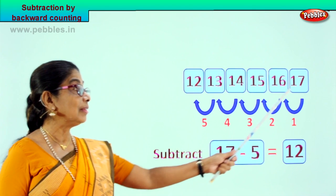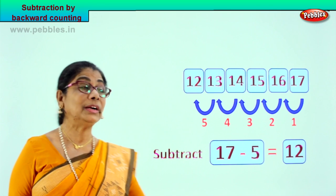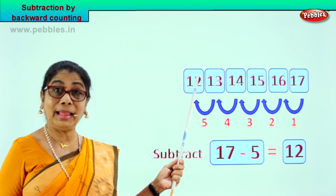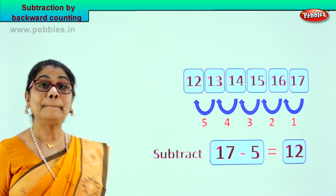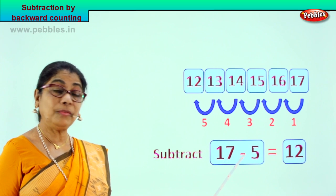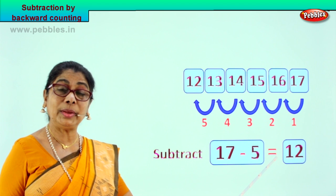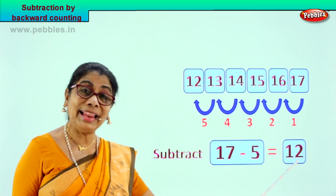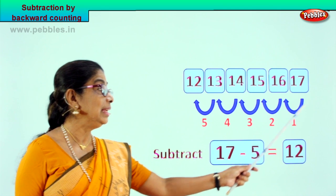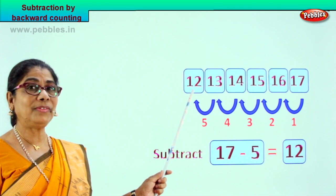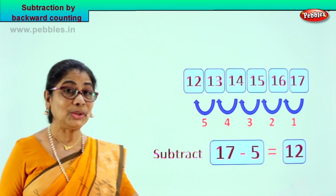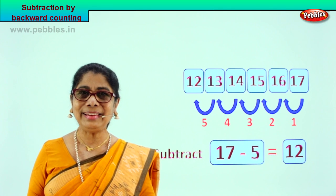Yes. From 17 you count backward 5 steps and you come to the answer 12. Subtraction by backward counting: 17 take away 5 is equal to 12. From 17 take 5 steps backward, you arrive at the answer 12. Did you enjoy doing it? Very interesting, isn't it?